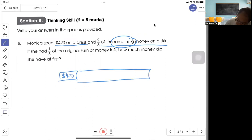Then I cut into five parts - two units. This is the dress. This is the skirt. I mentioned that she had one-third of the original sum of money left. So this part, the three units, is actually one-third of the money.